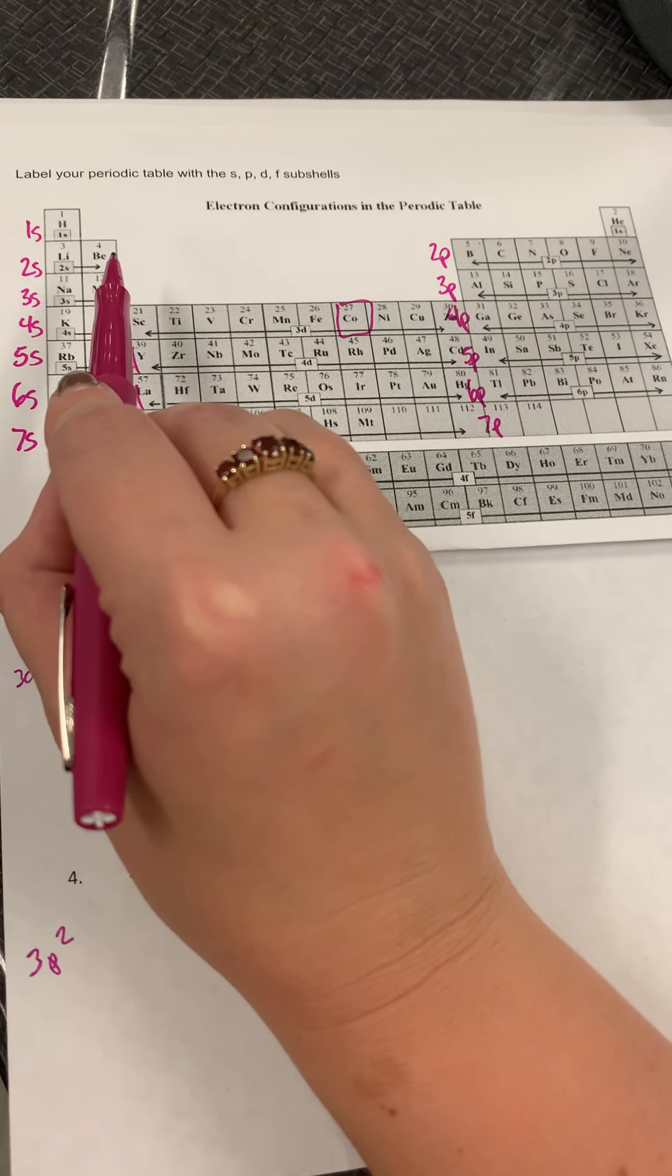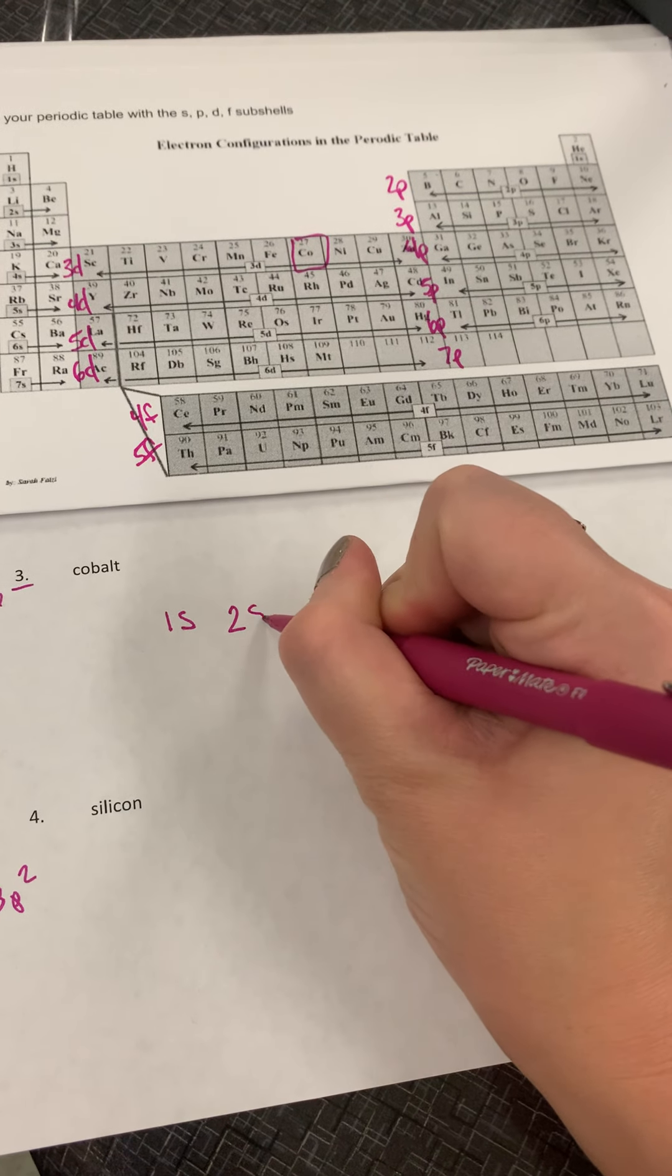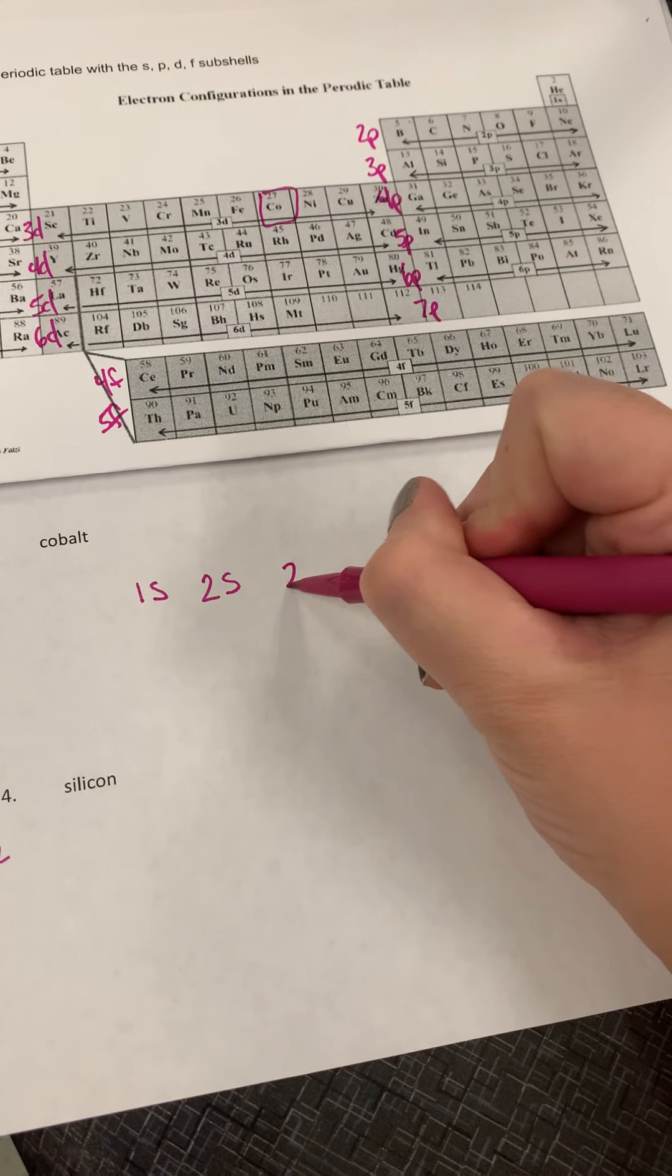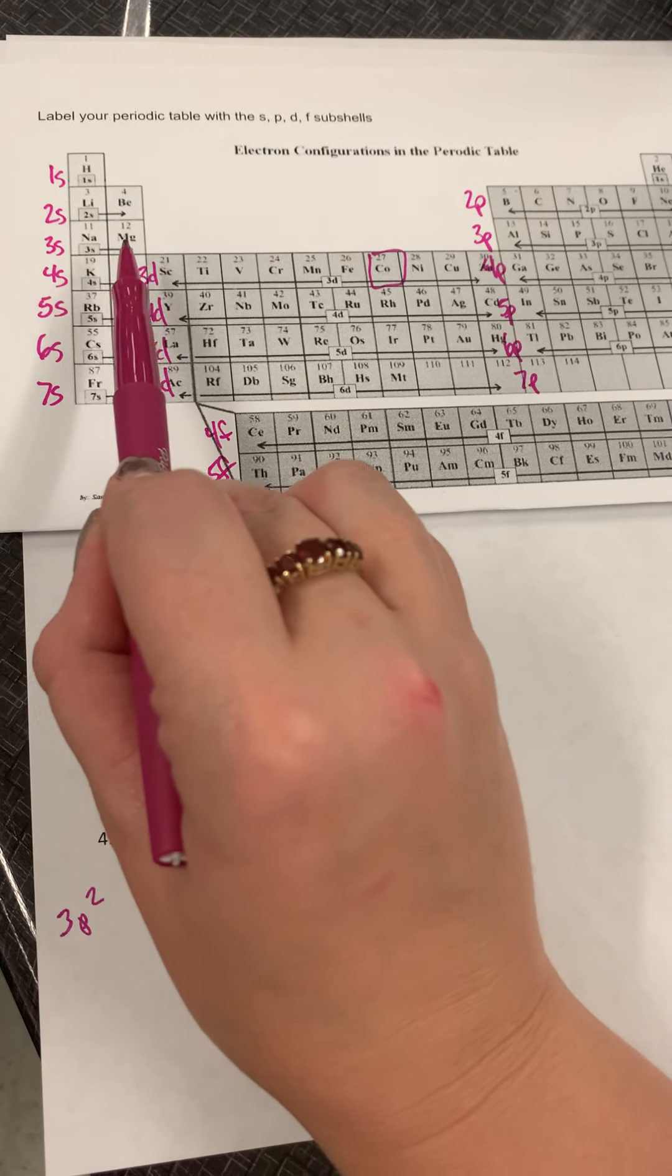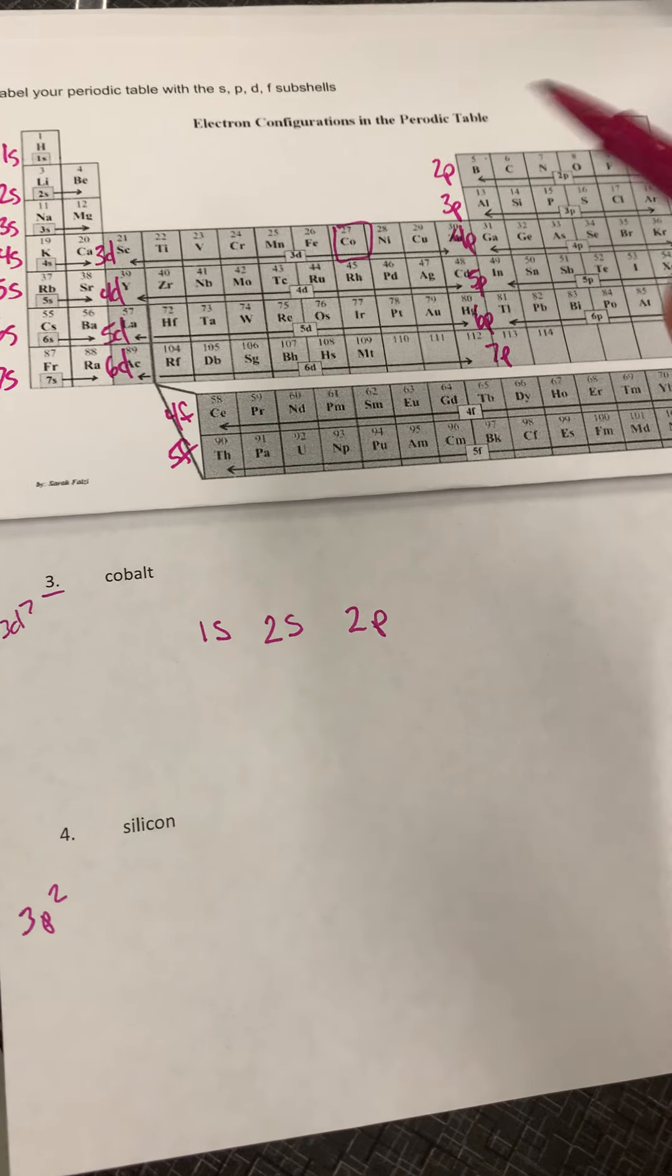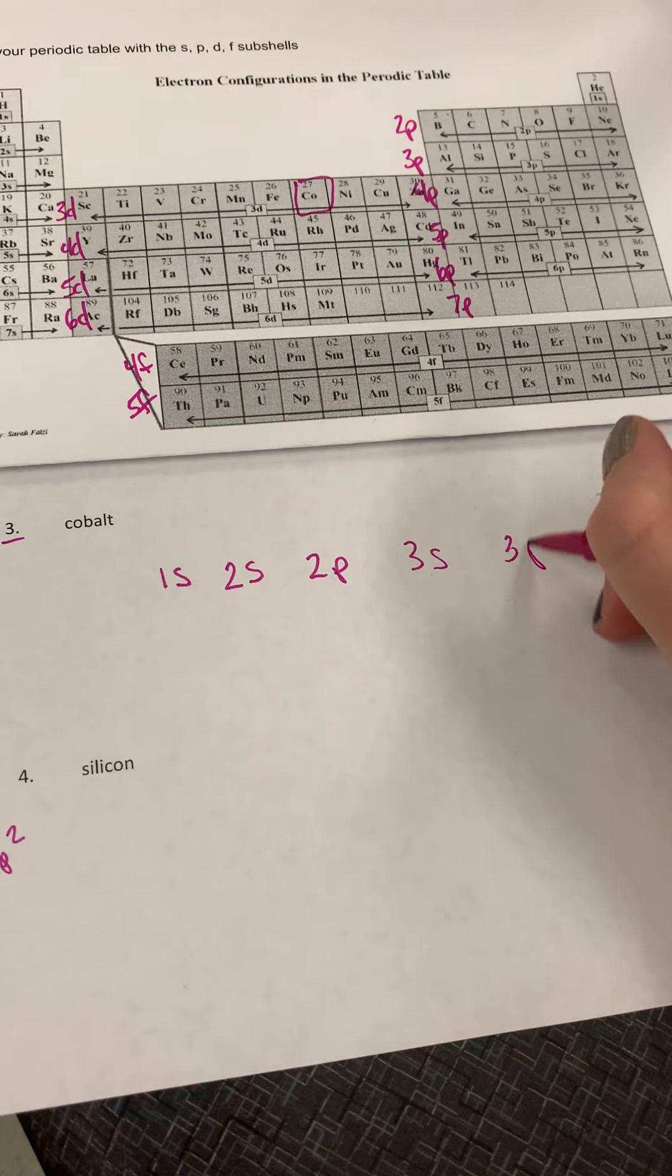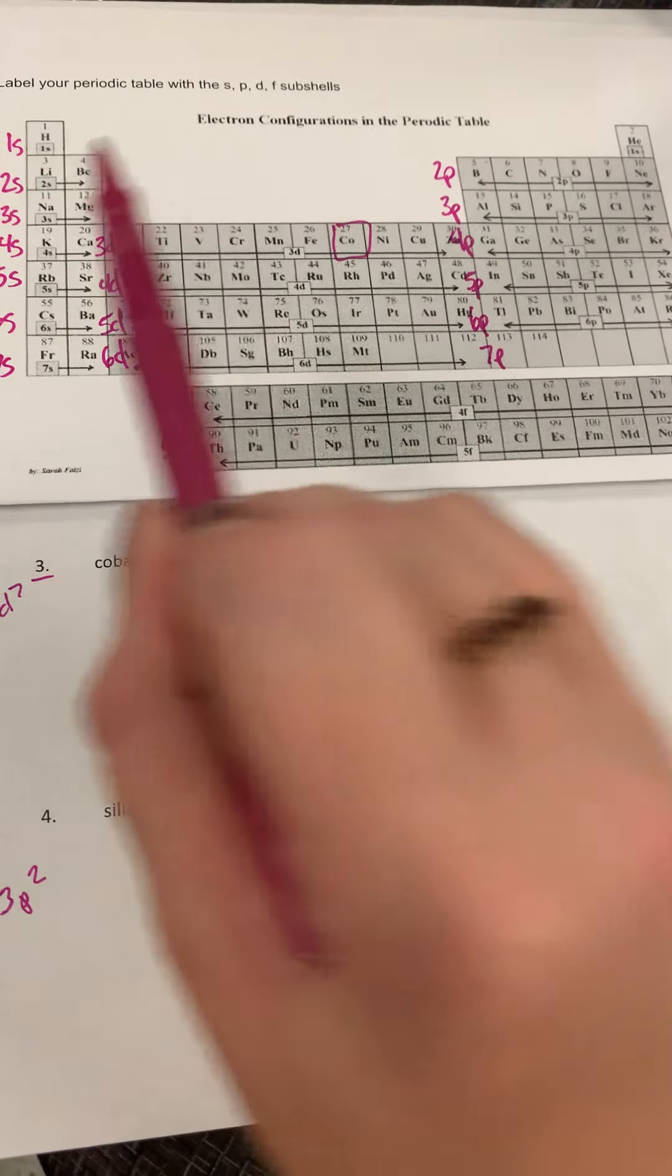1s2 is filled, so I write down 1s. I'm going to keep going. So I finish off that line, go back to the beginning, drop down. Hit a 2s, and it's full because I haven't hit cobalt. So I write it down. Keep going, hit a 2p. Go all the way across, haven't hit cobalt yet. Keep going. Back to the beginning, hit a 3s. Filled, haven't hit cobalt yet, hit a 3p.